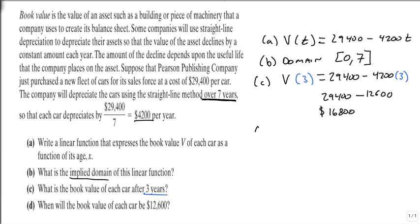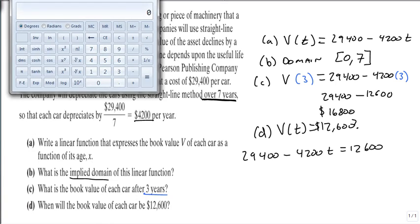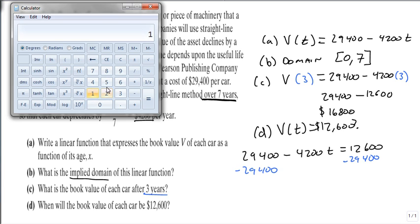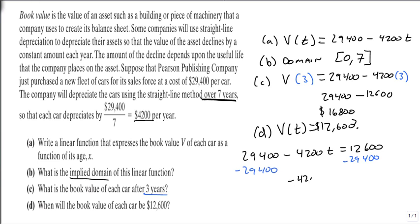The next question is, when does V(t) equal $12,600? We replace V(t) with $29,400 minus $4,200t equals $12,600. We subtract $29,400 from both sides and get minus $4,200t equals minus $16,800. When we divide both sides by minus $4,200, they both become positive, and we can see that t is four years.